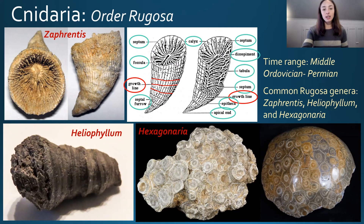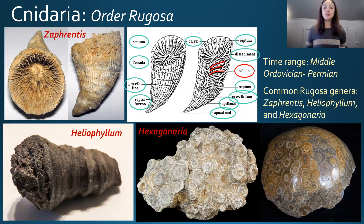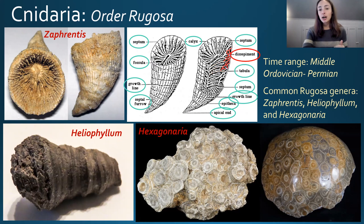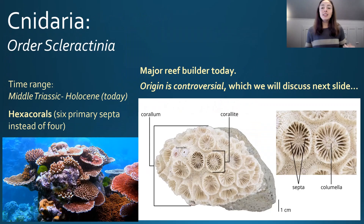The entire body of the horn coral is called the epitheca. Internal structures include tabulae — horizontal table-like structures highlighted in red — and dissepiments, which are more bubbly structures near the outer edges of the horn. Lastly, the apical end is the point of the horn.